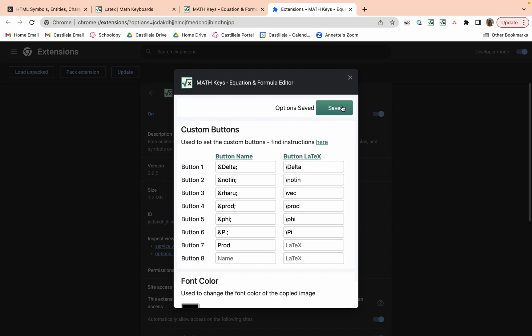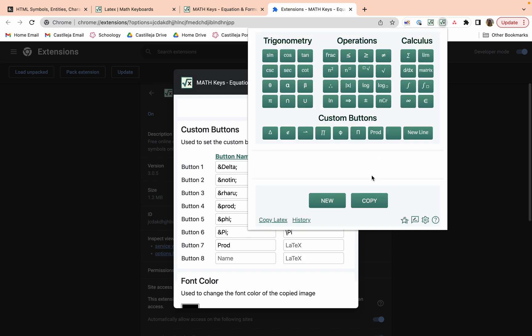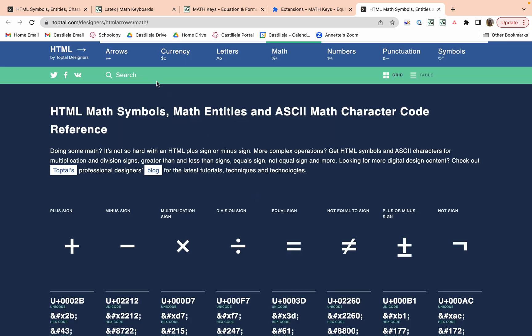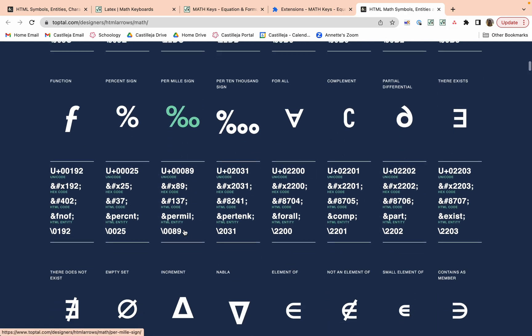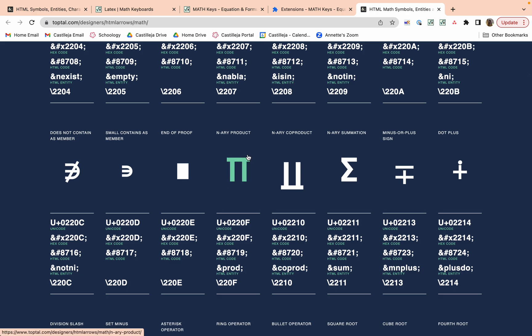But say you don't want that and you want the actual symbol to show up. What you do is go in here and find the HTML symbols, which is just all the math symbols. You can find here there's product and look at HTML entity.